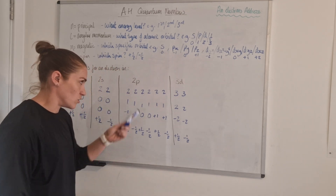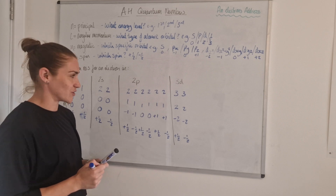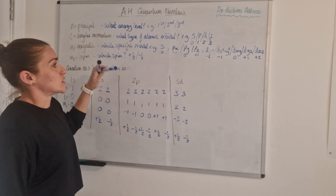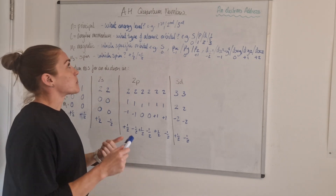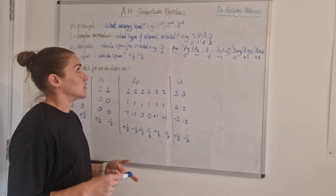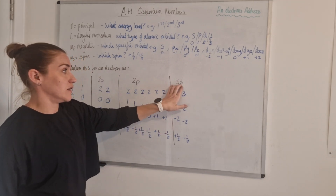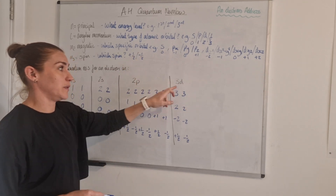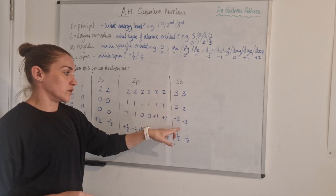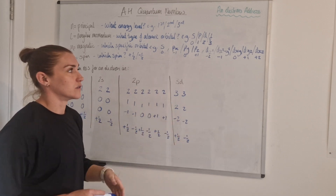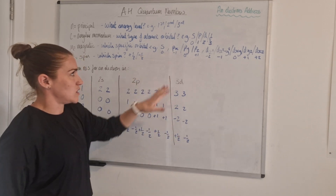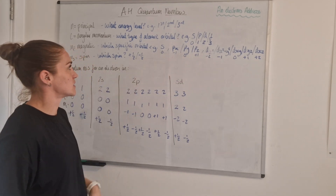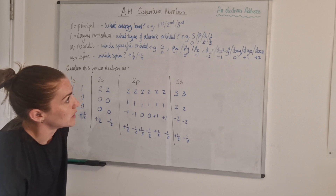Don't memorize all possible quantum numbers for the electrons in each subshell — just learn the order of assigning the electron's address. What energy level is it in? What type of orbital is it in? That information you get from the question. Then you pick based on how many of those types of orbitals there are. And the spin is always the easy bit.